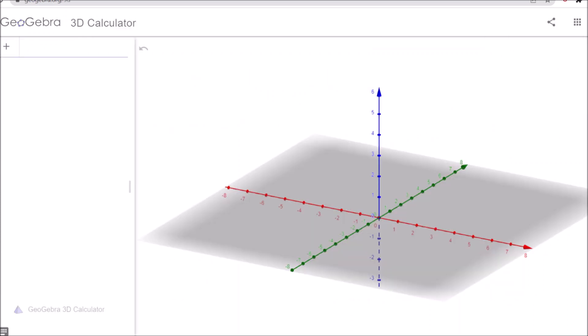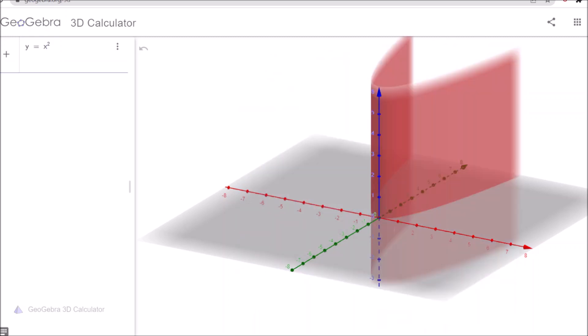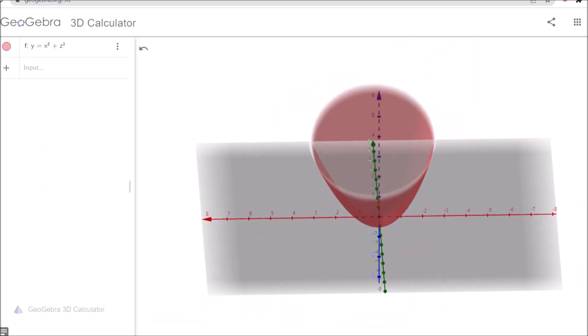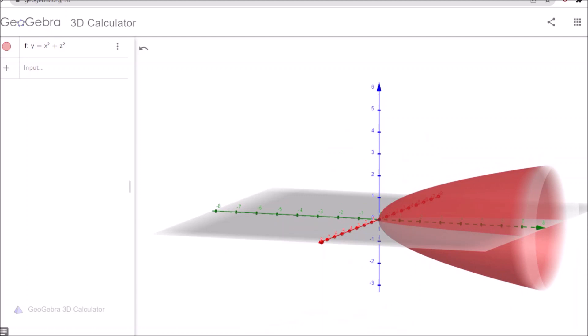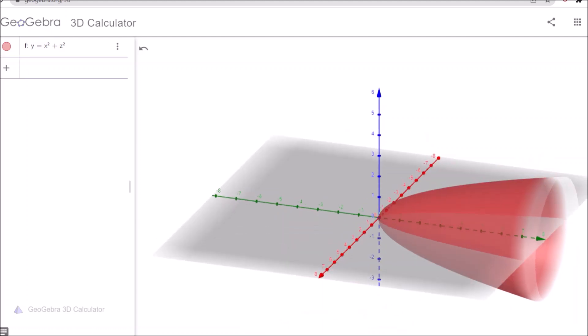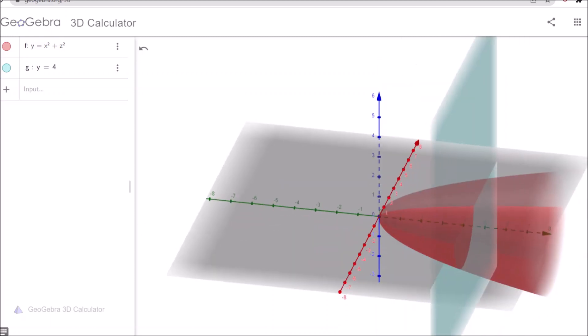Once you click on 3D calculator, this will get open. So now what is the equation? You just type y = x² + z², and that's what the paraboloid will get over here.